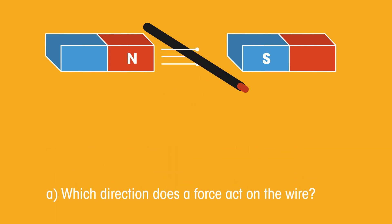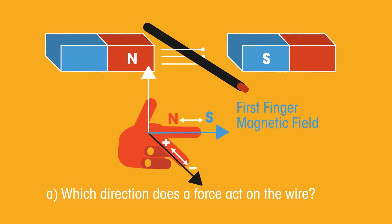For A, hold up your left hand in the current position. Magnetic field is going from north to south. The current is going in this direction, so the force is going up.